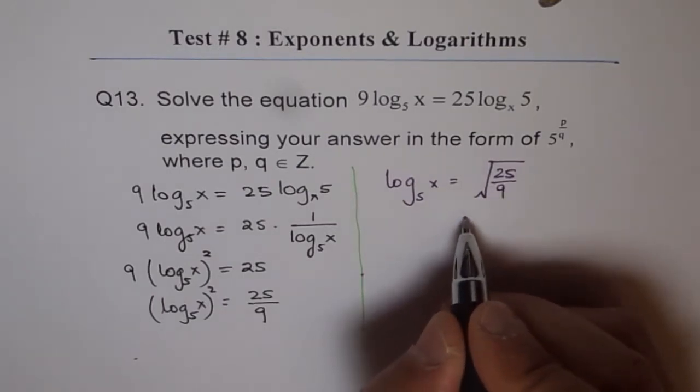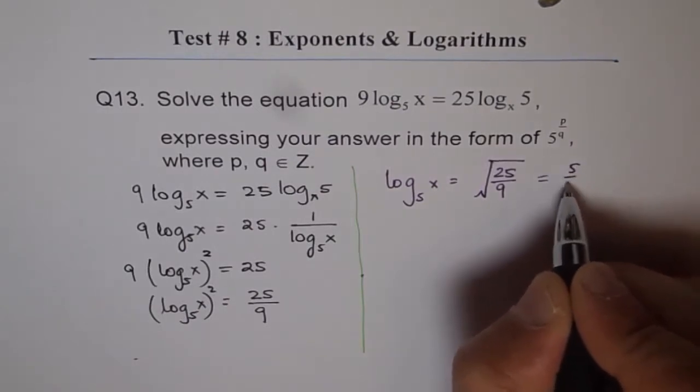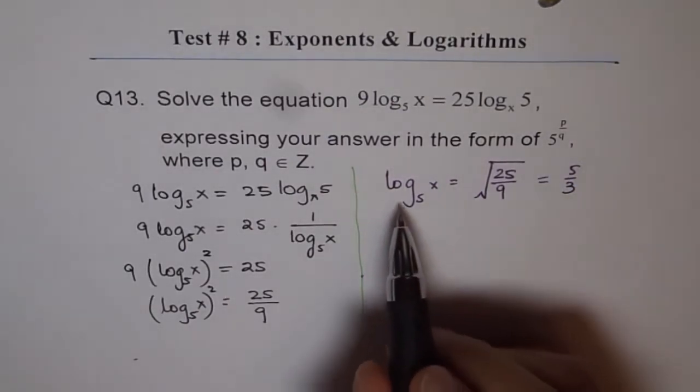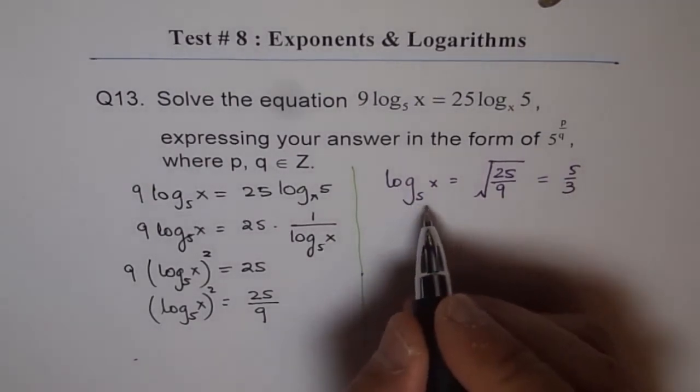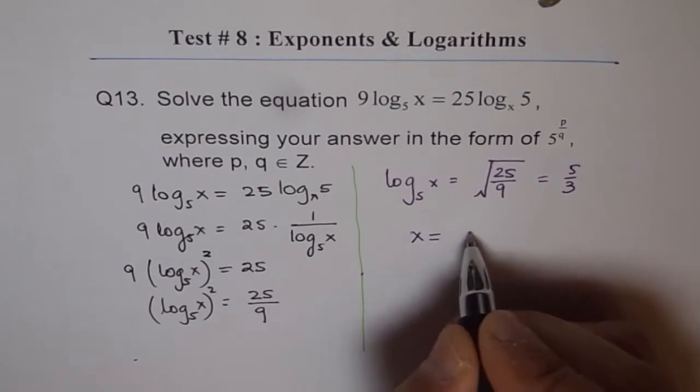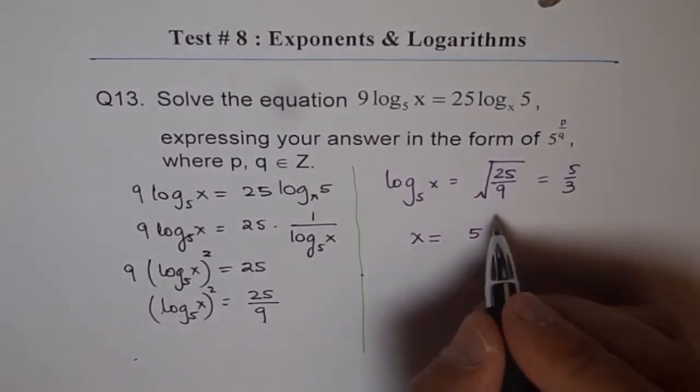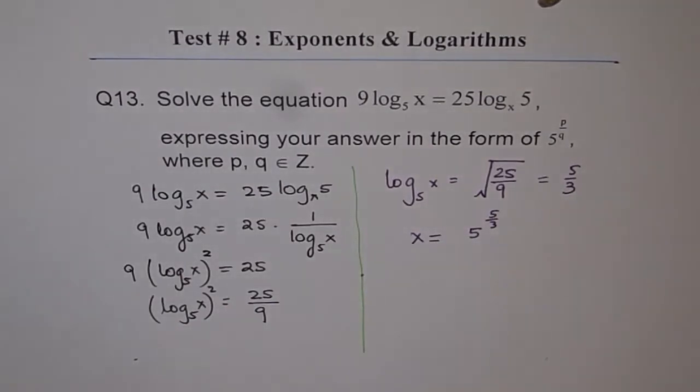So, we will, which is equal to, let me write this as 5 over 3. So, that is what we have taken. Now, log 5 of x equals to 5 over 3. So, we can write x is equals to 5 to the power of 5 over 3. Do you see that? So, 5 to the power of 5 over 3. So, that is our answer. 5 to the power of 5 over 3.